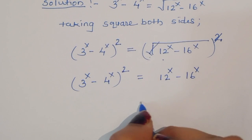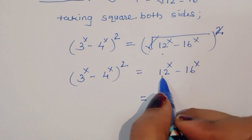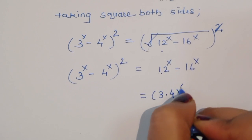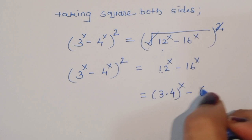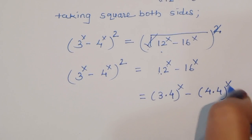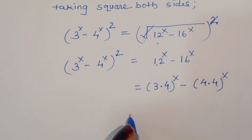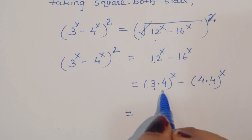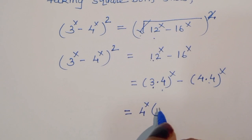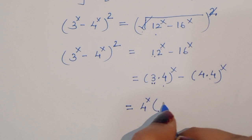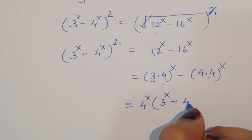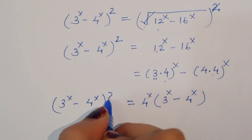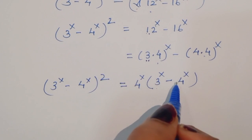So, (3^x minus 4^x)^2 is equal to 12^x minus 16^x. Now, since 3 times 4 equals 12, we can write 12^x as 3 times 4^x, and 16^x as 4 times 4^x. We can take 4^x as common on the right side, giving 4^x times (3^x minus 4^x).